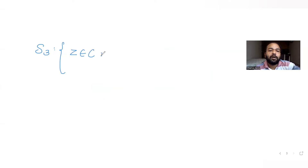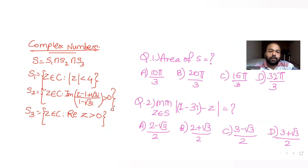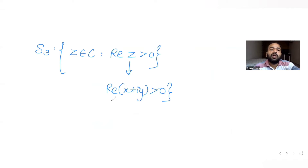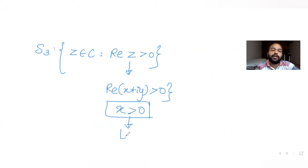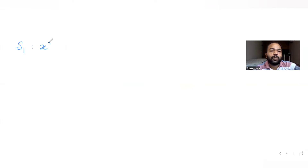For S3: z belongs to complex numbers and the real part of z is greater than zero. Since the real part of x + iy is x, this simply means x greater than zero — the region to the right of the y-axis. So all three equations are: x² + y² less than 16 (circle), y + root 3 x greater than zero (line), and x greater than zero (right half-plane).